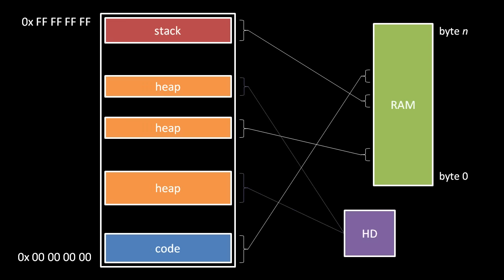To free up valuable RAM, the OS may decide to swap out pages of a process to storage, usually a hard drive. For example, these pages of heap memory are not currently mapped to any part of RAM. Instead, their data has been temporarily copied out to a hard drive, and in the process memory table, these heap pages have been marked swapped.